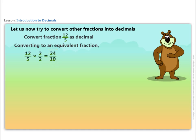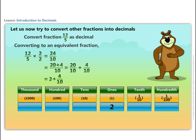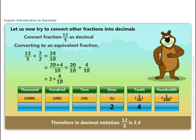24 by 10 can also be written as 20 plus 4 by 10, or 20 by 10 plus 4 by 10. Putting it in place value table, we get the fraction in decimal notation as 2.4.